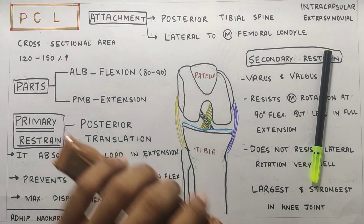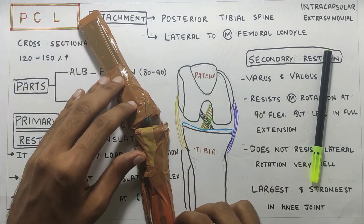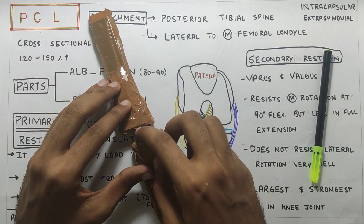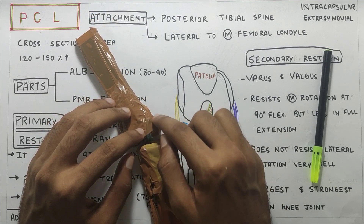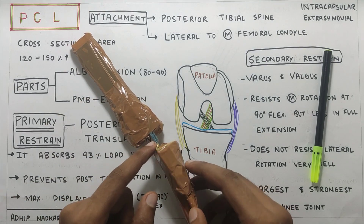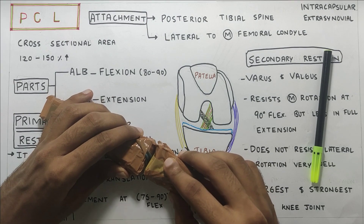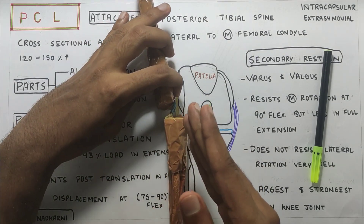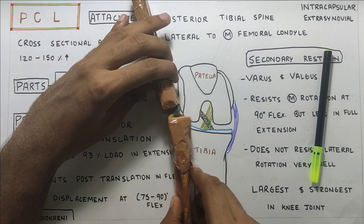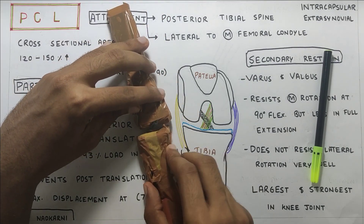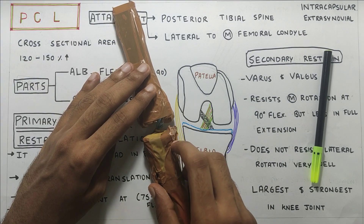To demonstrate this, I will take my model. As you can see, this is the femur, tibia, and this is the PCL ligament. It is attached on the lateral side of the medial condyle and posteriorly to the tibial spine. It prevents posterior translation — posterior translation would be the tibia going behind. If I try to take my tibia back, it prevents that. It also prevents valgus and varus stresses and medial rotation, but not lateral rotation.